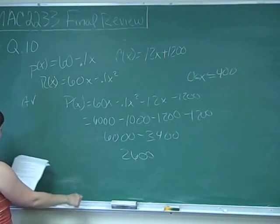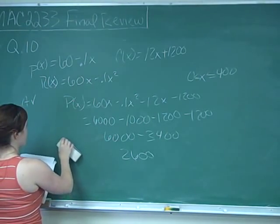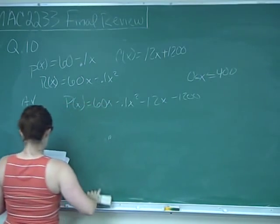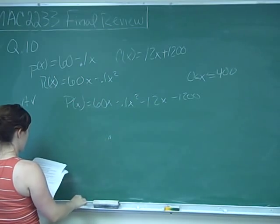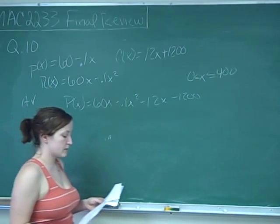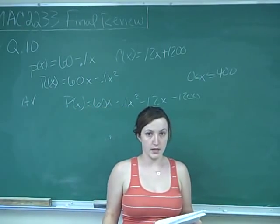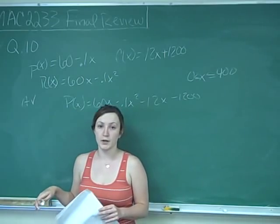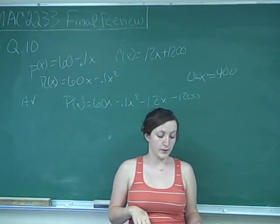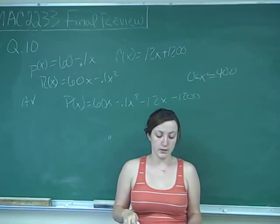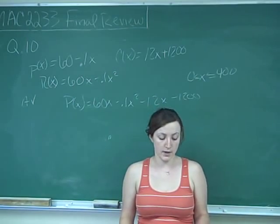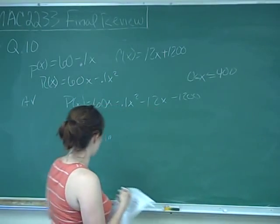Statement B says the marginal profit when X is 100 is approximately $28 per unit, and the profit from the sale of 101 items is approximately $2,628. We know the profit for selling 100 items is $2,600. If the marginal profit is $28 at 100 units, that's the additional profit from selling one more unit. So statement B is true.